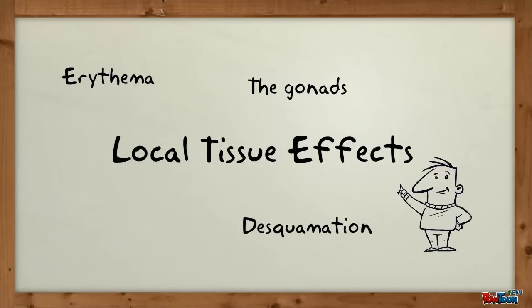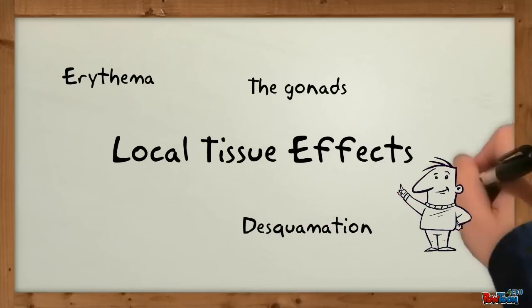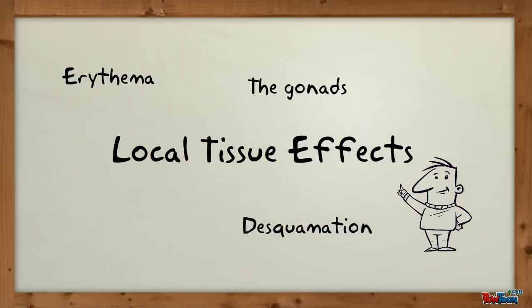The gonads are affected, in particular the sperm and the oocytes, and these are the most radiosensitive cells while they are in the stem cell phase.